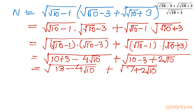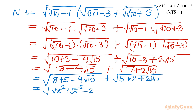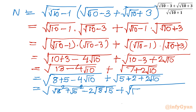Now we need to find the square root of each radicand. For 13 minus 4√10, I split 13 as 8 plus 5. For 7 plus 2√10, I split 7 as 5 plus 2, giving (5 plus 2 plus 2√10). To make the first radicand a perfect square, I write it as (√8)² plus (√5)² minus 2 times √8 times √5, noting that 2√8 × √5 equals 4√10, which matches.